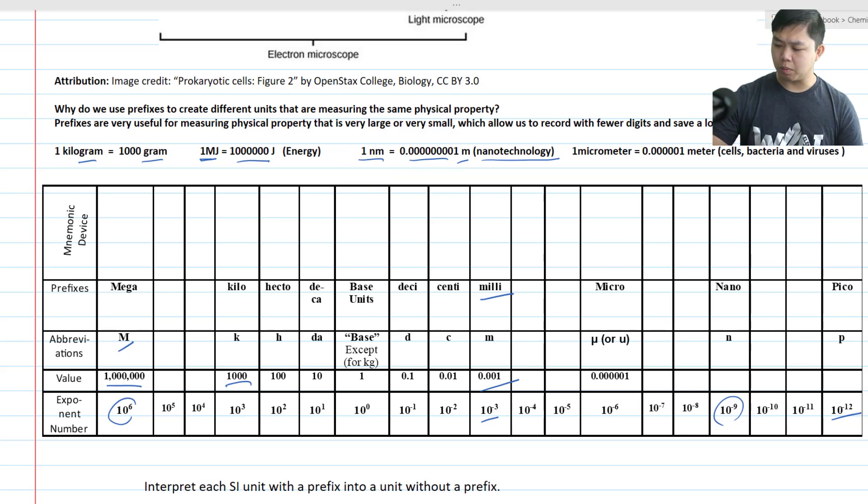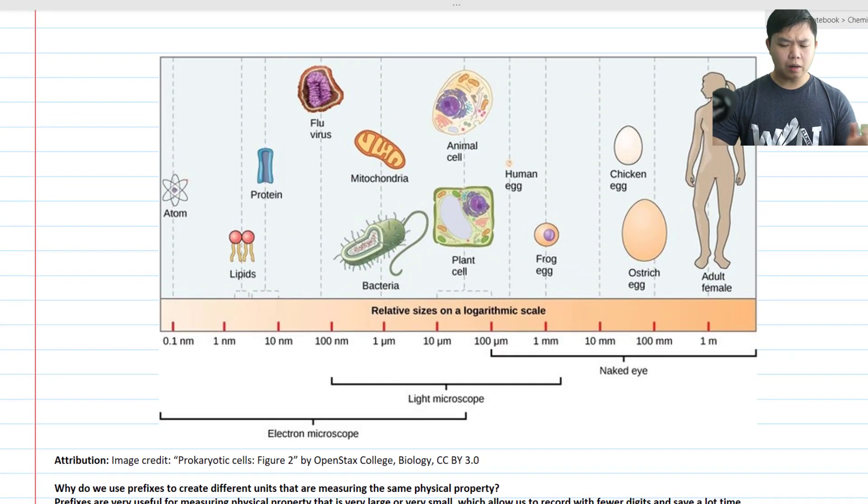Now let's look at a common example by looking at this picture over here. Here we have a very descriptive picture, starting with a human being, we measure in meters. And then going down, we have the eggs of a chicken. But that is something that we see, of course, we're going to use millimeters.